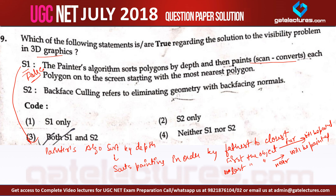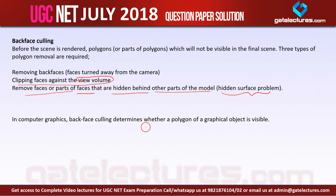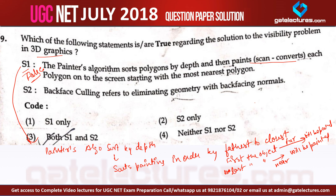This is exactly what the question asks — back face culling refers to eliminating geometry with back facing normals. Before the screen is rendered, polygons not visible to the final screen are removed using three methods: 1) removing back faces — faces that turn away from the camera; 2) clipping against the view volume; 3) removing faces or parts of faces hidden behind other parts of the model, which is called the hidden surface problem. In computer graphics, back face culling determines whether a polygon of a graphical object is visible. So statement number 2 is true.